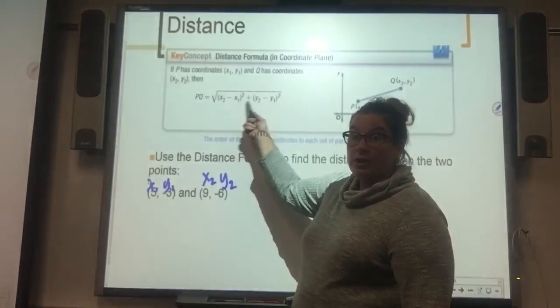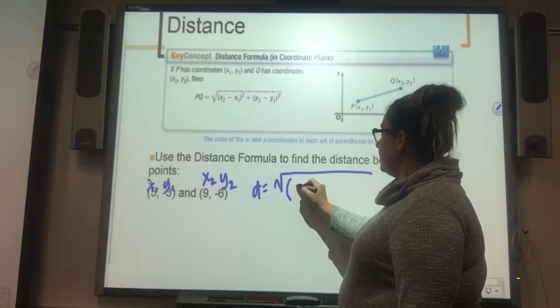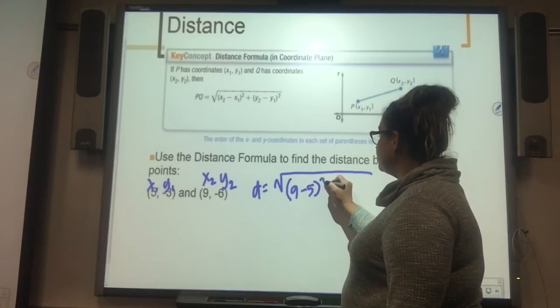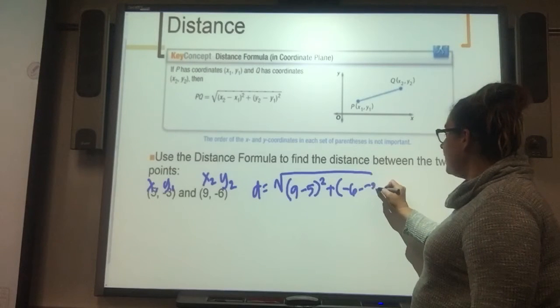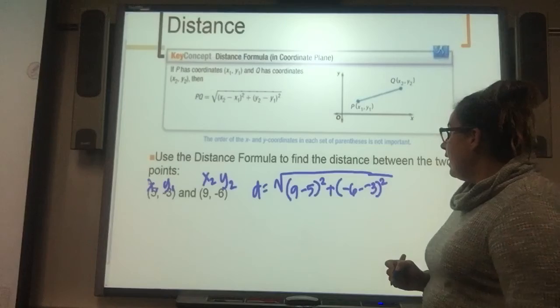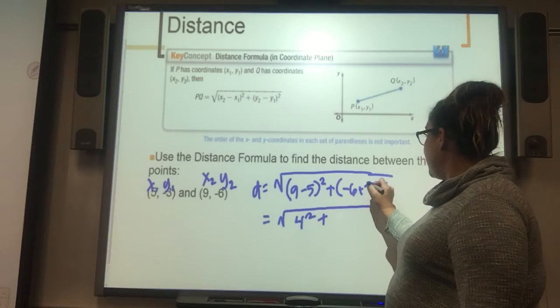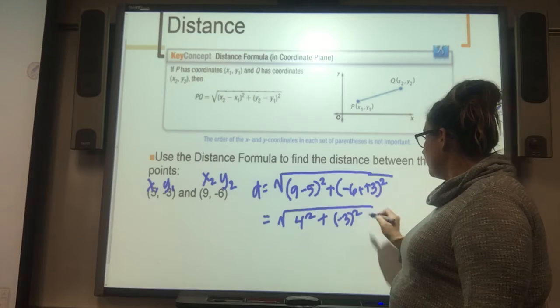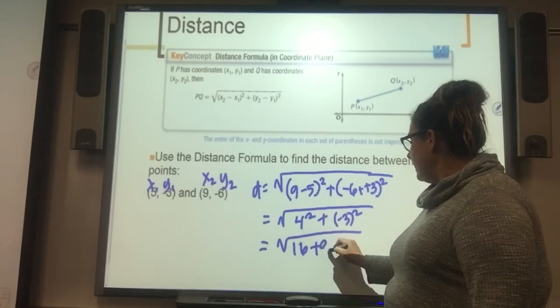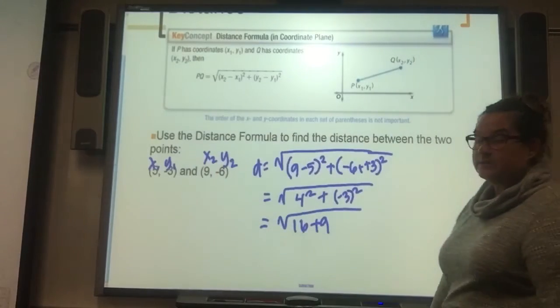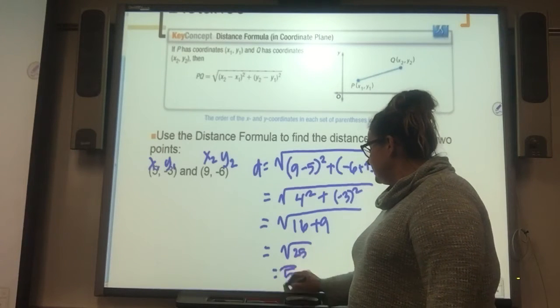And then I fill it into the formula. So the distance is equal to the square root of the quantity x sub 2 minus x sub 1 squared plus the quantity y sub 2 minus y sub 1 squared. And then I go through and I evaluate this. So this is equal to the quantity 4 squared plus the quantity negative 3 squared. The distance is equal to 16 plus 9 because negative 3 times negative 3 is positive 9. So it's equal to the square root of 25. So the distance is 5.